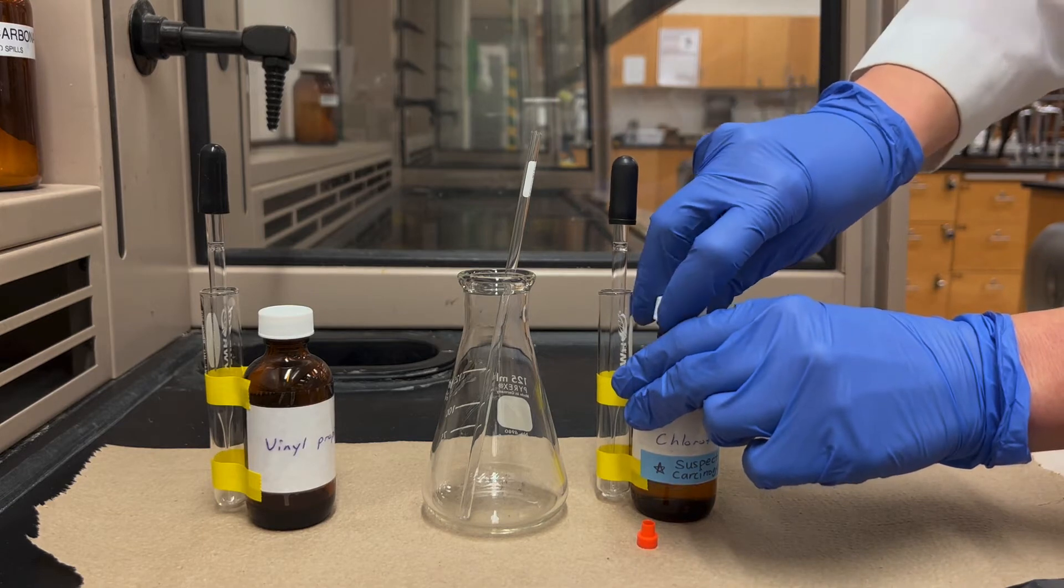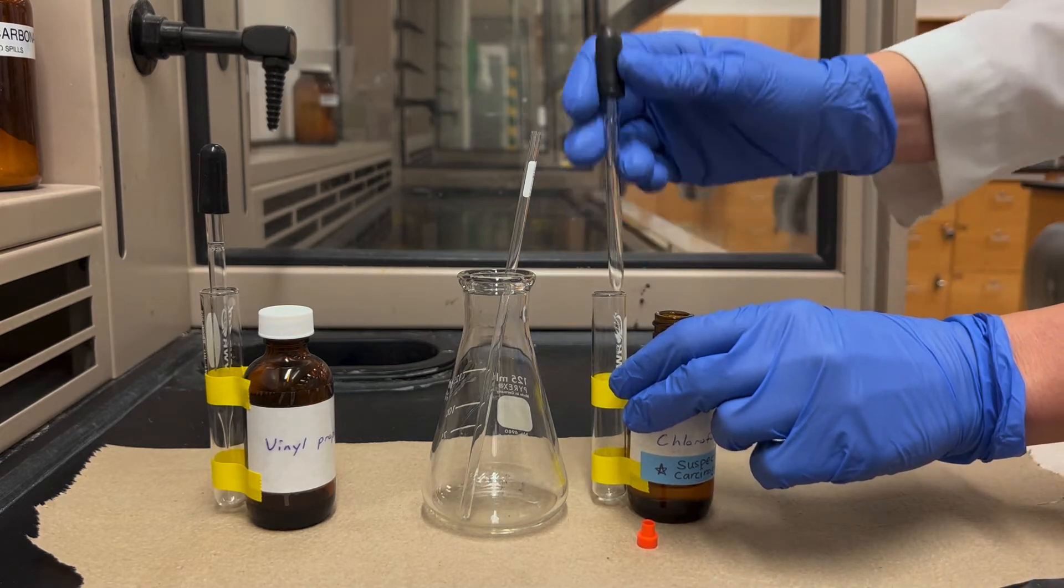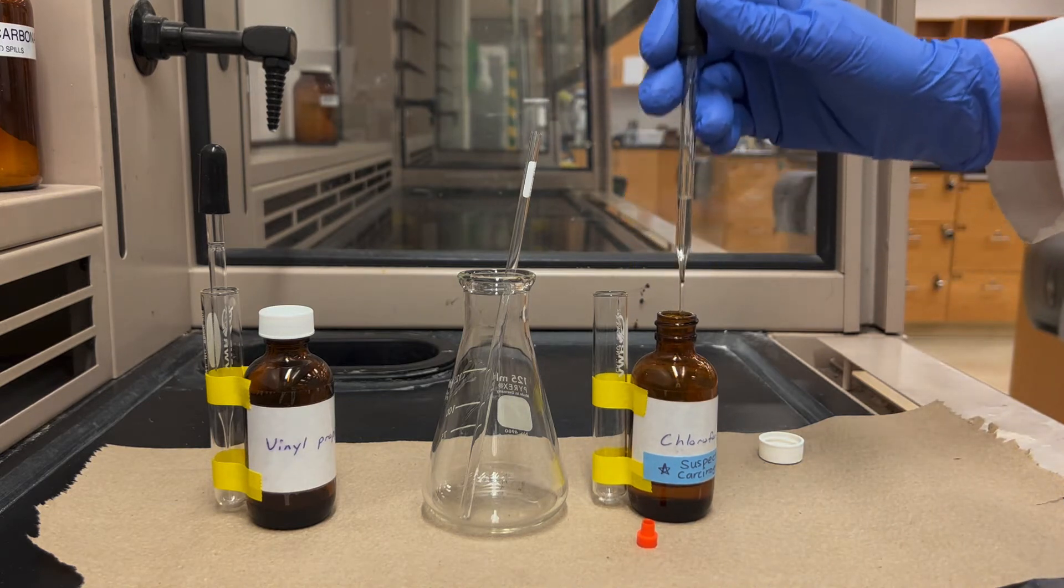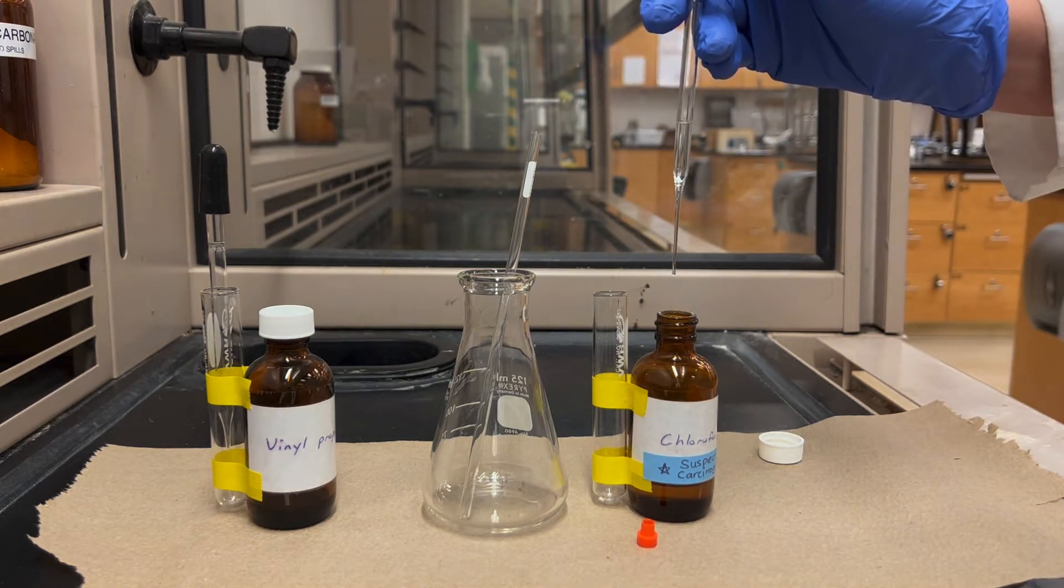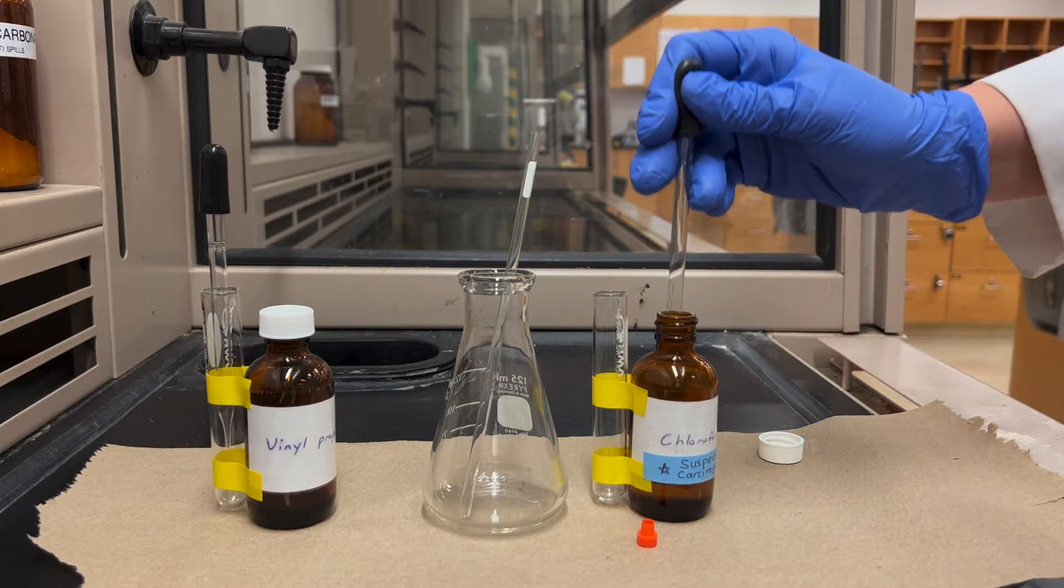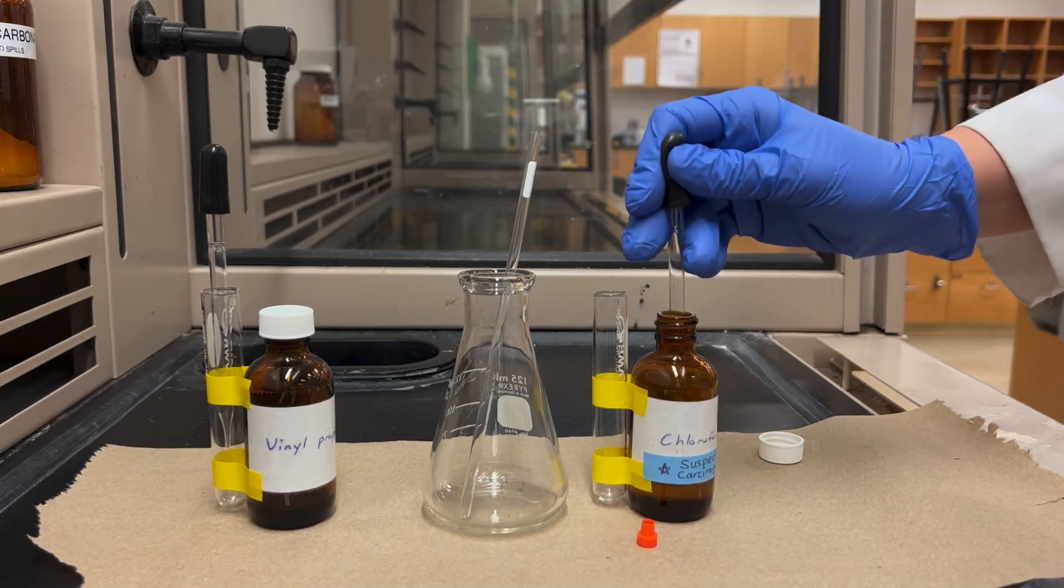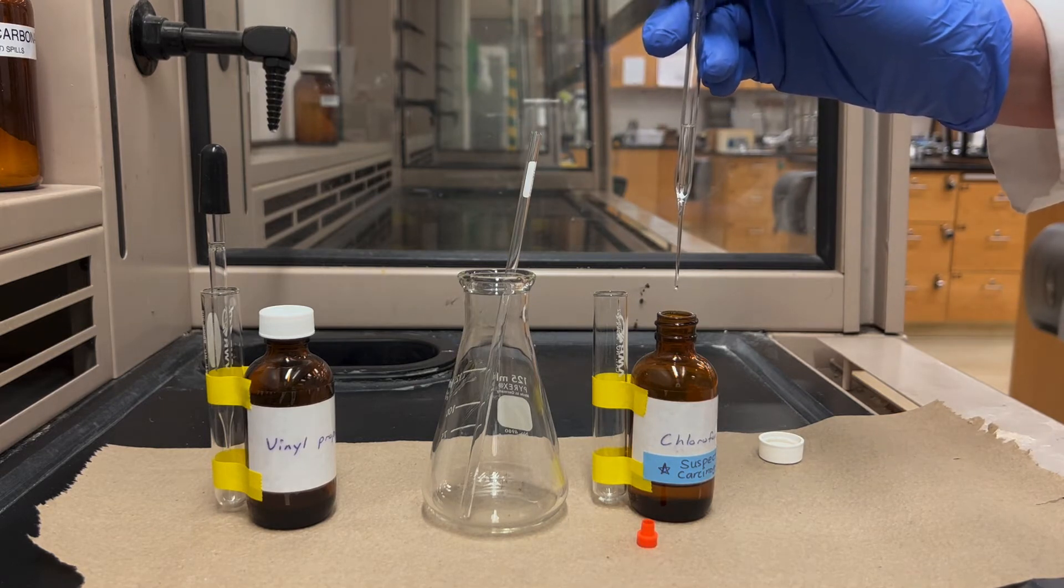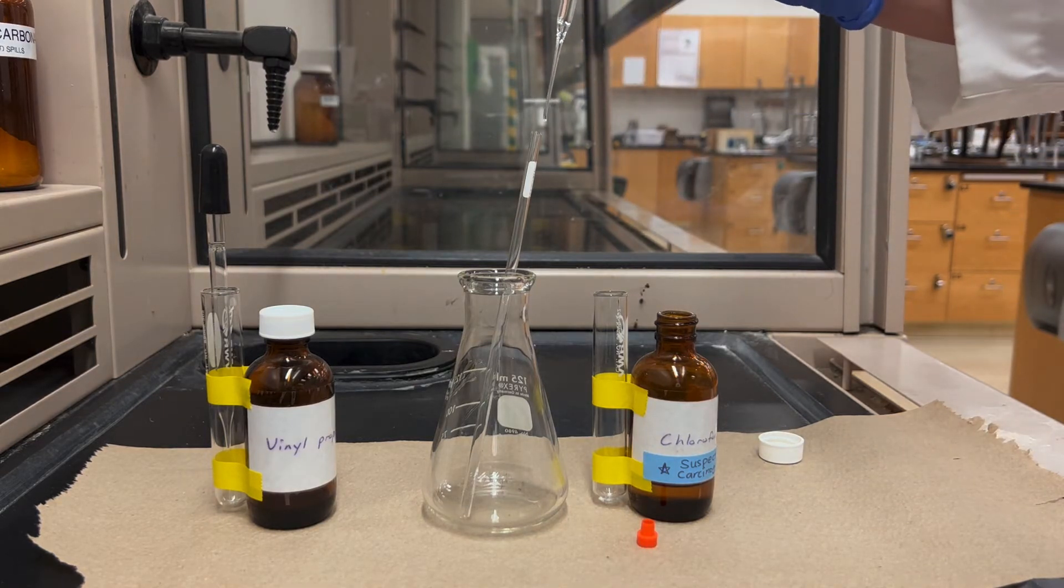Deuterochloroform also has a tendency to drip out of the pipette, so if you pull up some liquid and then notice that it's dripping out of the pipette all on its own even without pushing on the bulb, one way to fix this is to withdraw and expunge the solvent a few times. By doing that you'll saturate the headspace in the pipette with vapors and it won't drip anymore.